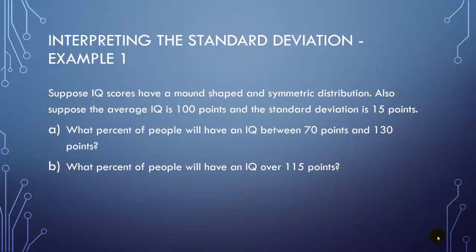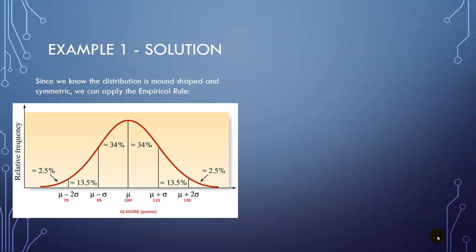So to address the first question, what percent of people will have IQs between 70 and 130, since we follow a mound-shaped and symmetrical distribution, we can use the empirical rule. And again, the empirical rule says 68% falls within one standard deviation. That means since it's symmetrical, 34% on each side. We know 95% fall within two standard deviations, so that means an extra 13.5% would fall on each side between one and two standard deviations. And then the remaining 5% will be split among the tails. So let's see, we're talking about between 70 and 90 points. Well, that's two standard deviations away on each side, so that means approximately 95% of IQ scores will fall between 70 and 130 points.